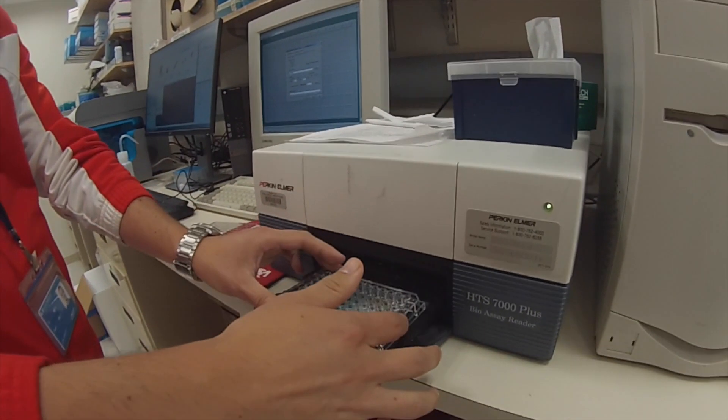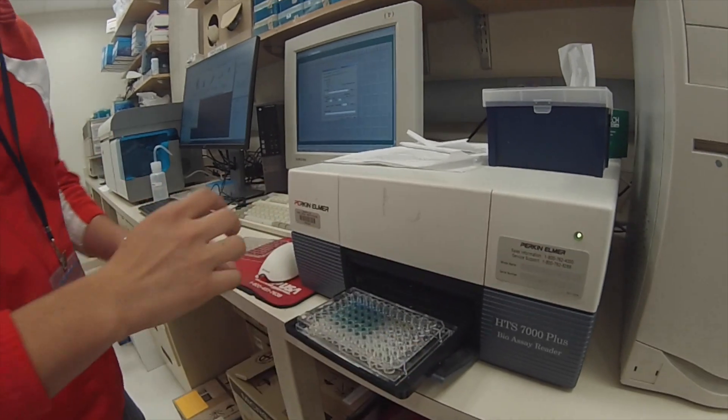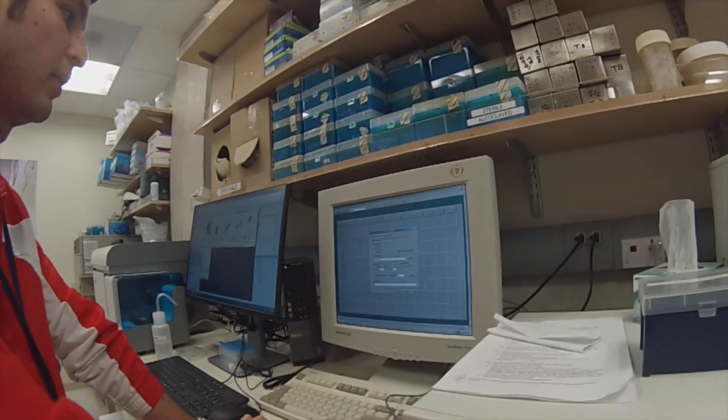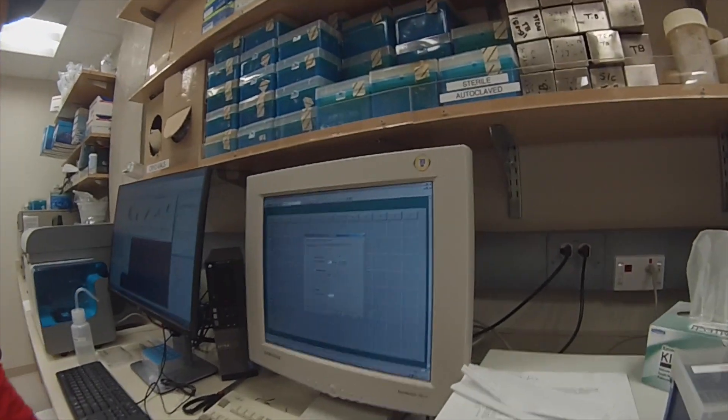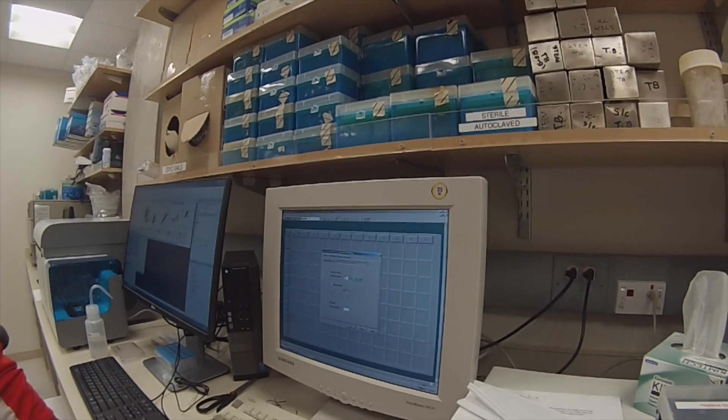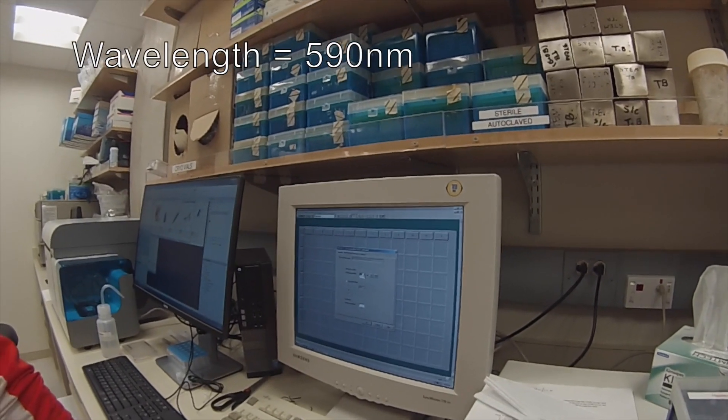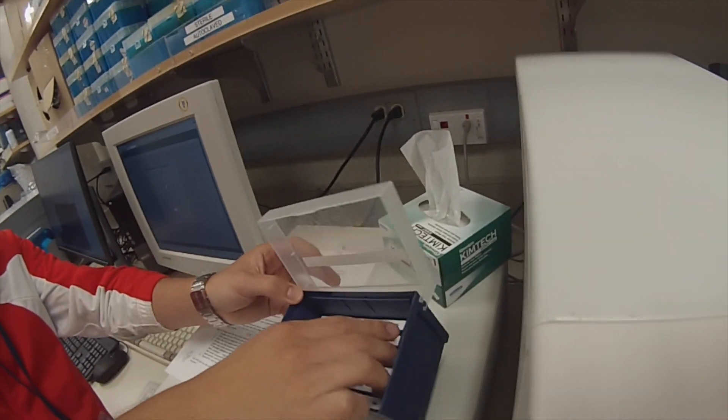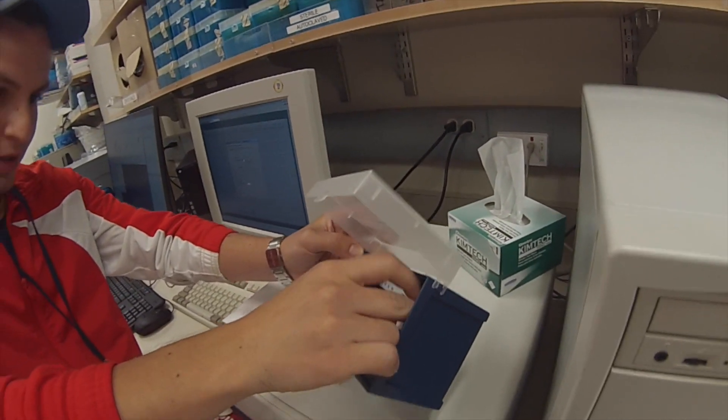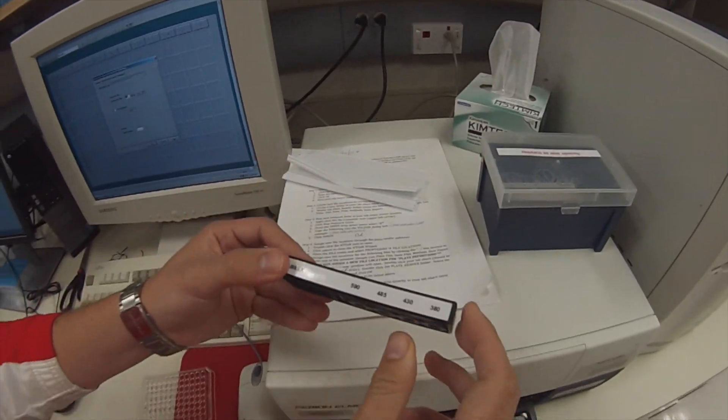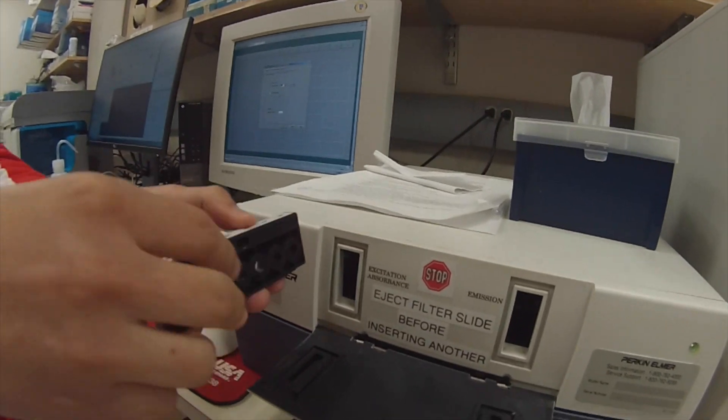We also have to set the wavelength of the absorbance filter because that's the measurement filter that we're using. Normally we use 590, well I'm using 590. It depends on the experiment that you're doing. We have these filters and we're just going to put them in here.